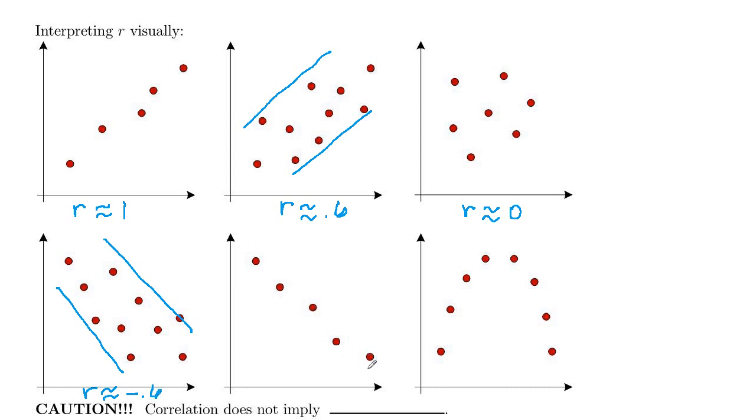And then here, your data goes down left to right. And it's pretty doggone close to a line, to being on a line. So here, your R would be approximately negative 1.